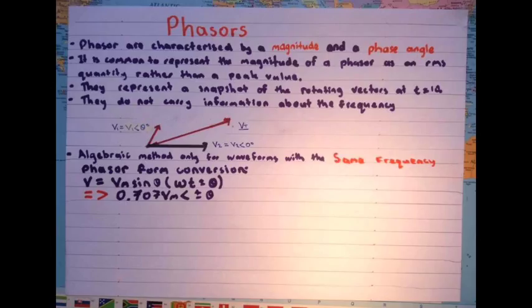Phasors are characterized by magnitude and phase angle. It is common to represent the magnitude of a phasor as an RMS quantity rather than a peak value. They represent a snapshot of the rotating vectors. They do not carry information about the frequency. The algebraic method of phasors can only be used for waveforms with the same frequency.